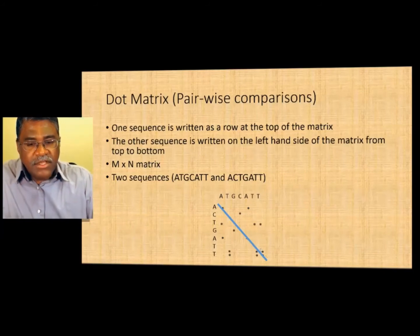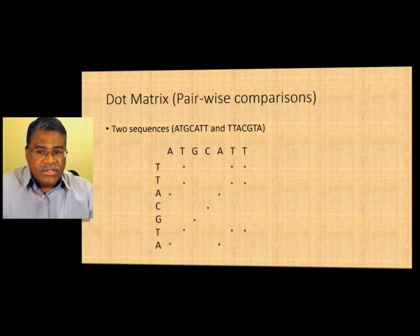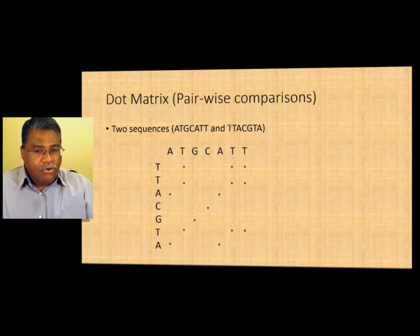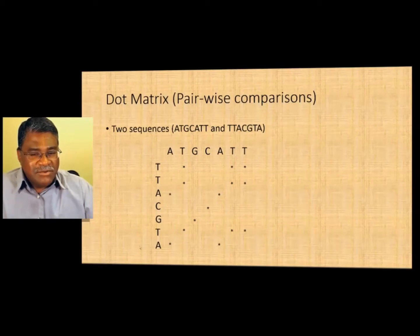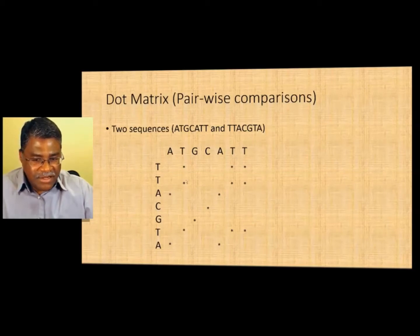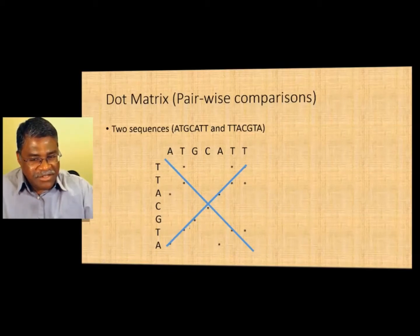One disadvantage of a dot matrix system is you're not allowed to put in gaps — it is as is. The dot matrix gives a qualitative view of alignment rather than a precise alignment. If you reverse two sequences and put them in the dot matrix, while there may not be much similarity along the diagonal, look at the line orthogonal — at 90 degrees — to the diagonal. If that anti-diagonal is well-populated, you realize the sequence is just a reverse of the other.